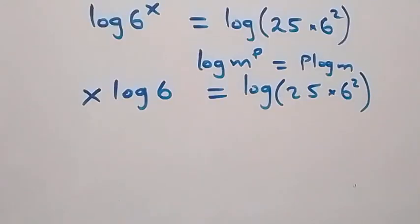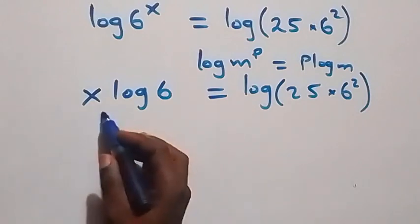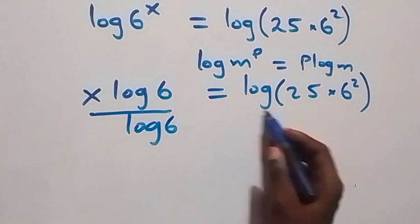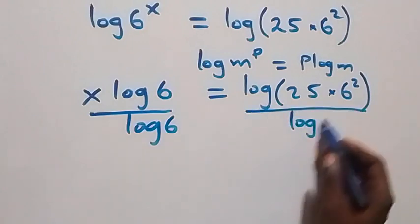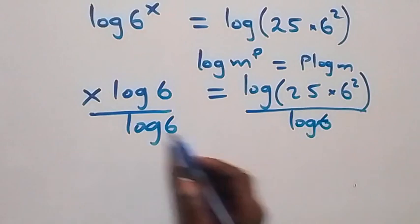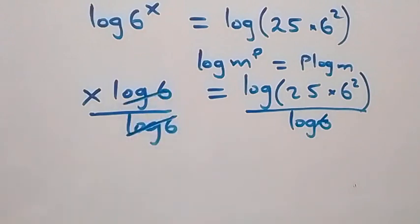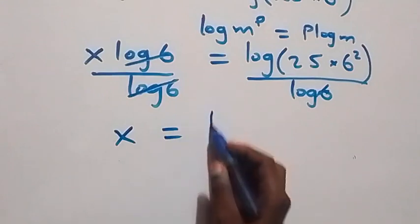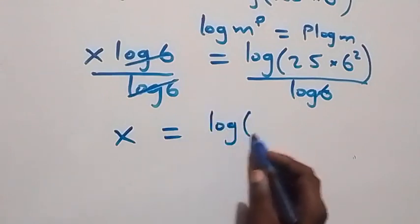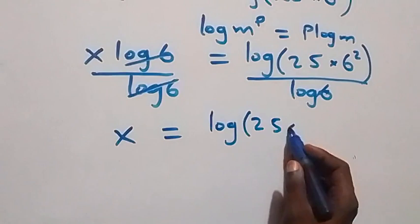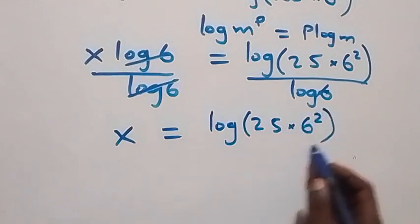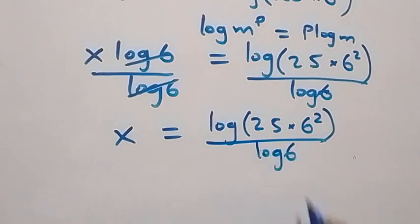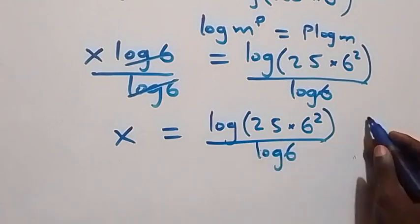Now we divide both sides by log 6. On the left side, log 6 cancels, and we are left with x, which equals log of 25 times 6 squared over log 6.